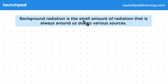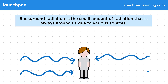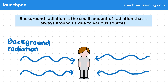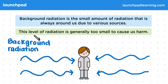Background radiation is the small amount of radiation that is always around us due to various sources, so we're constantly exposed to it. This level of radiation is generally too small to cause us harm, as it's very weak compared to direct source exposure.